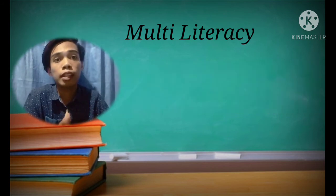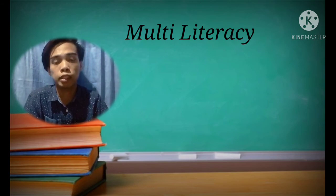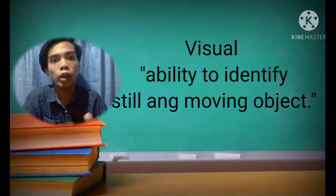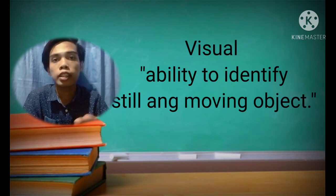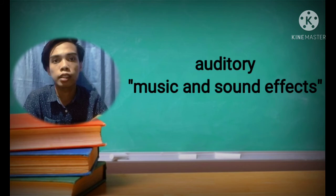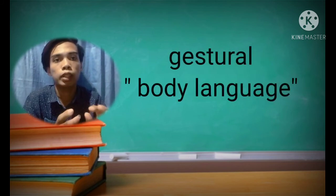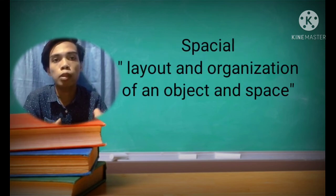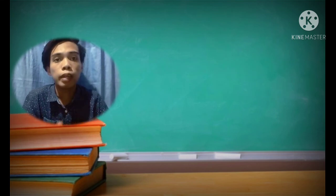In conclusion, multi-literacy helps students improve their knowledge and understanding about five concepts. First is linguistic, the oral and written language. Second is visual, or the ability to identify still and moving objects. Third is auditory, which is all about music and sound effects. Fourth is gestural, about facial expressions or body language. Last is spatial, about the layout and organization of objects and space. These five concepts help learners develop their literacy skills.